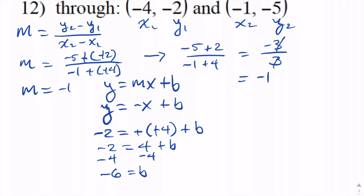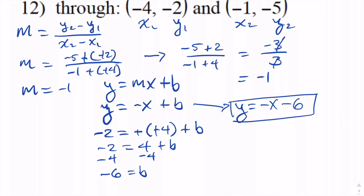Now that we have b, we can rewrite the equation: y equals negative x minus 6. And there is the equation of the line for this problem.